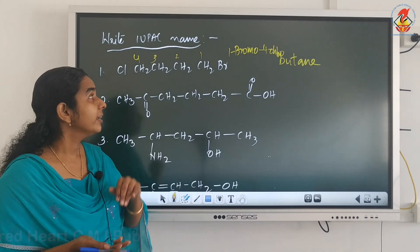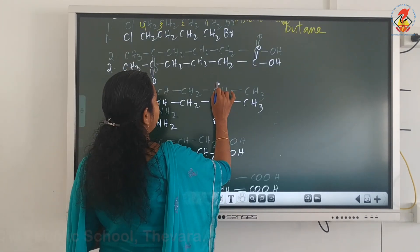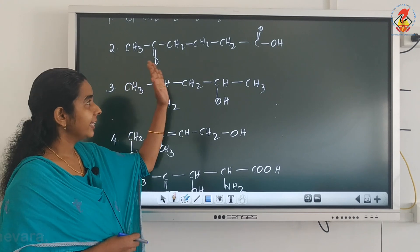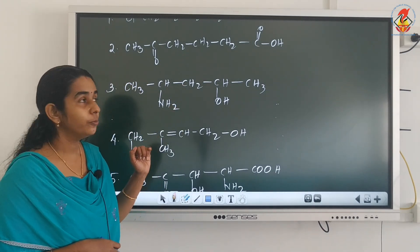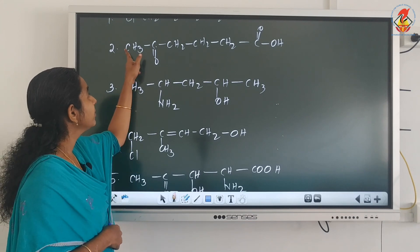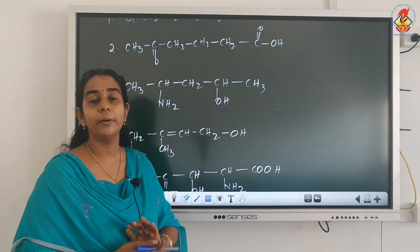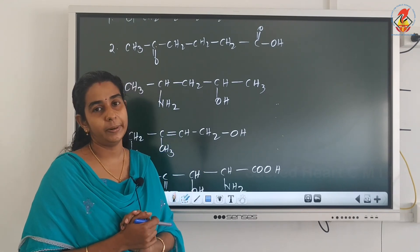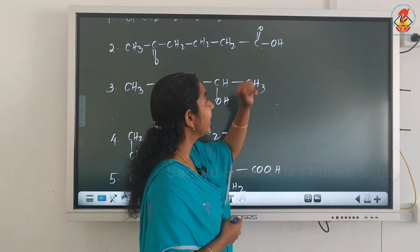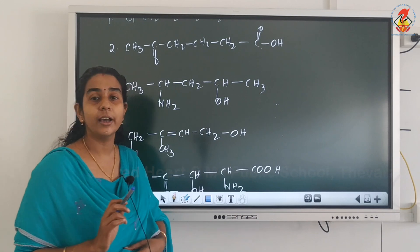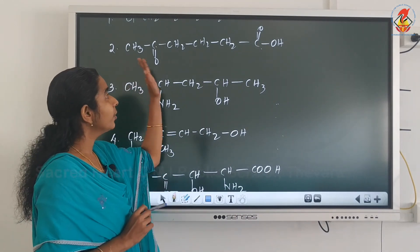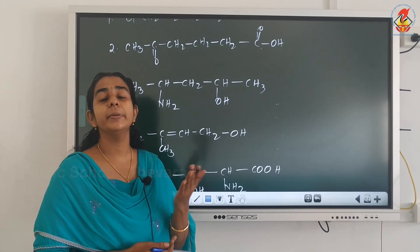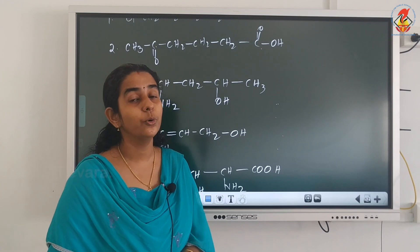In the second compound, it is a straight chain compound. The functional groups present are: a C=O group between two carbon atoms, which is a keto group, and a COOH group at the end — carboxylic acid. Comparing priorities, COOH has highest priority over the ketone. So COOH will be considered as the principal functional group and should get the lowest possible number.